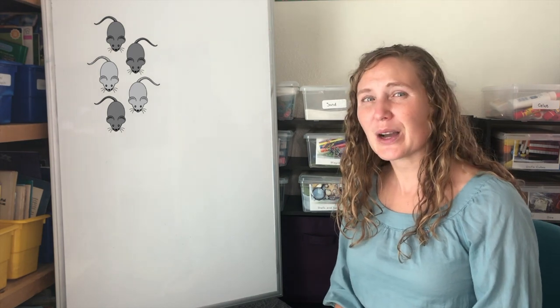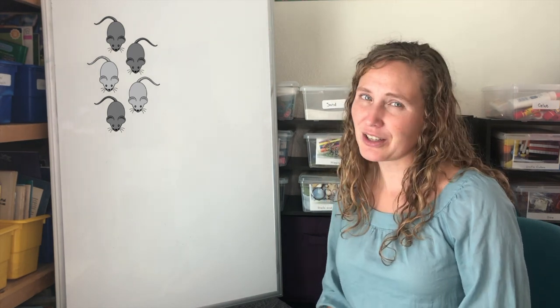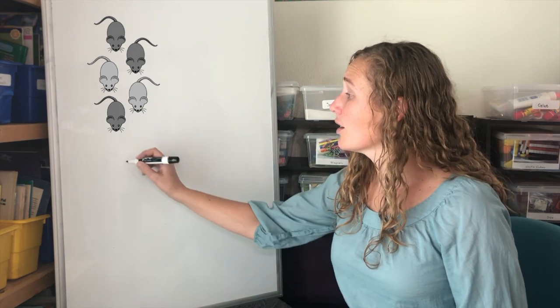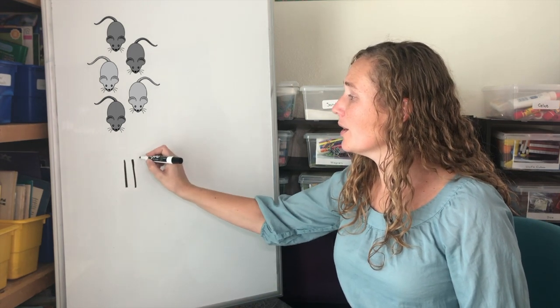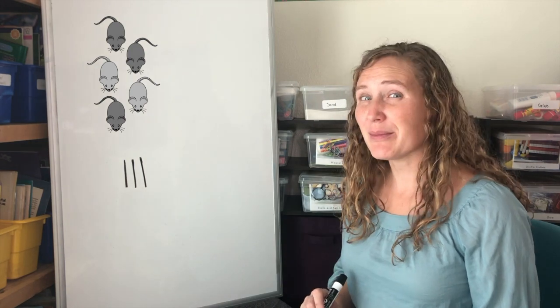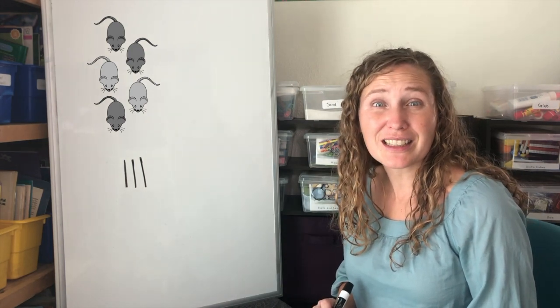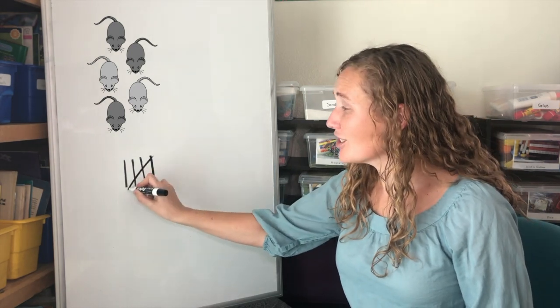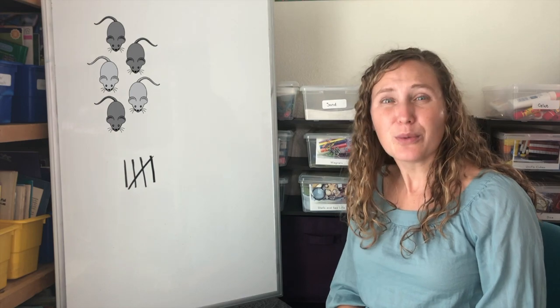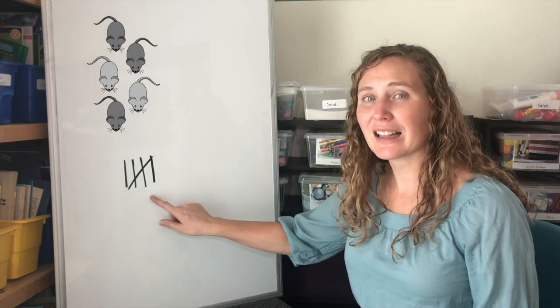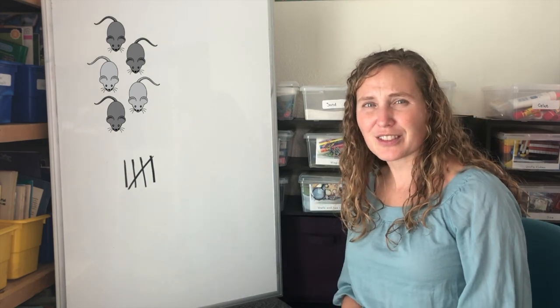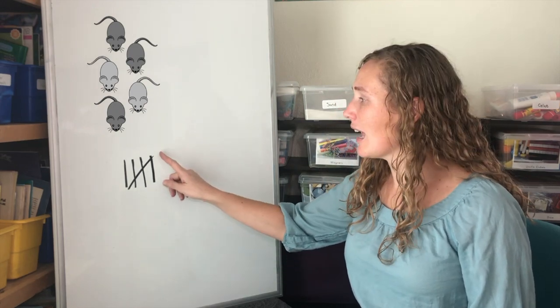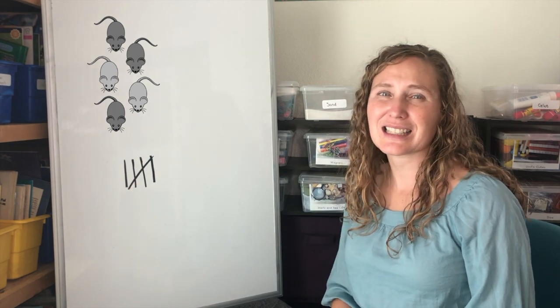Did you know that we can use Tally Marks to help us with addition stories? We started with one, two, three gray mice and then two more came along. One, two more gray mice. We've made five tallies. A group of five tallies looks like this. Four Tally Marks across and one Tally Mark that slashes them.